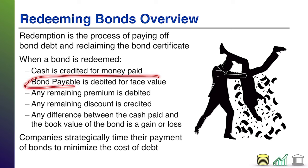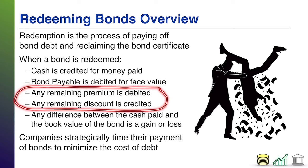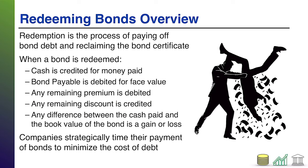Bond payable — because you're paying off that liability, you've got to get it off your books. Bond payable is always on the books at face value, so we're going to debit it for face value and that'll make it go away. If at the time of redemption there is any remaining premium or discount, it has to go away too. Think of this very similarly to fixed assets. Any remaining premium would be debited to make it go away. Any remaining discount would be credited to make it go away.